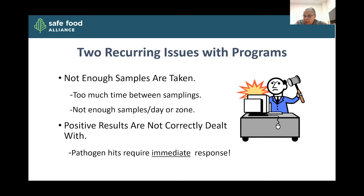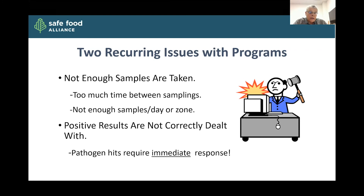Even if you're doing a lot of samples, if you're leaving too much time between your sampling events, you could see a situation where the second sampling event has contamination and now you have to ask how much of my product has been exposed. You want to make sure you're doing this frequently enough so that if there is a contaminant, you catch it right away and it doesn't impact as much of your product. The other issue we commonly see is positive results are not correctly dealt with — you cannot ignore finding a positive result, especially on pathogens. You have to do something immediately about that.